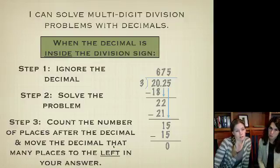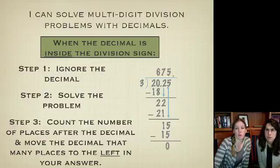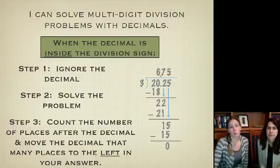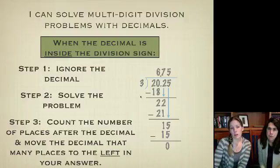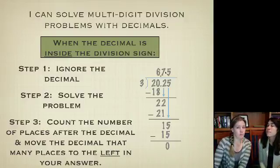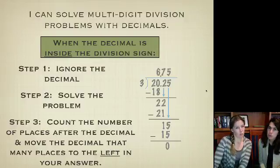Now, my last step here was to count the number of places after the decimal and move it that many places to the left. So, there's one, two here. So, I need to move my decimal one, two, to the left. So, my answer should be six and seventy-five hundredths. So, that is that one. And you can always double-check your answer and see if you're right by multiplying. If I multiply six point seven five times three, I should get twenty point two five.